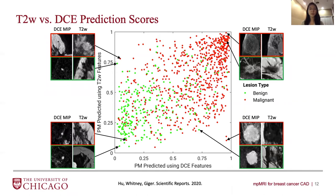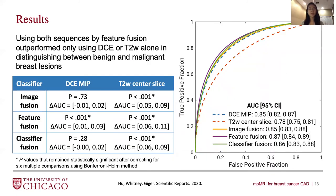This figure shows the prediction scores from the T2-weighted sequence versus those from the DCE sequence. We observed notable disagreement between the two, suggesting that using both will likely improve the result. We found that feature fusion yielded the best result among the three multi-parametric methods, achieving an AUC of 0.87, which was significantly higher than using either DCE or T2-weighted sequence alone.